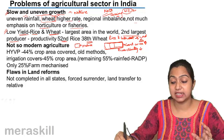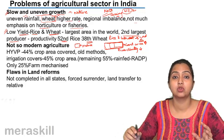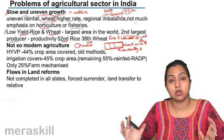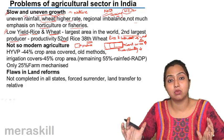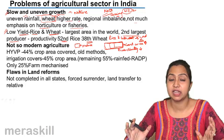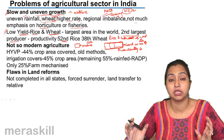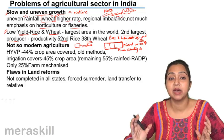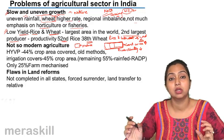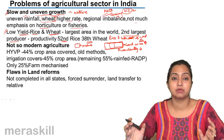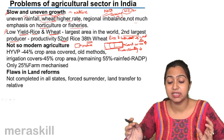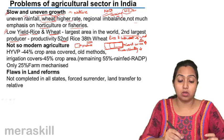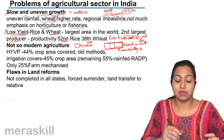We use a larger area to produce a given amount of produce. Because we have larger area, we are producing more, so production-wise we are second in rice and wheat. But productivity-wise, per hectare, we stand at 52nd position in rice and 38th in wheat. So low yield is another problem that we face.